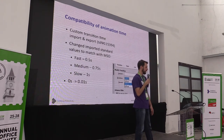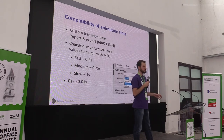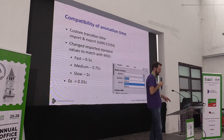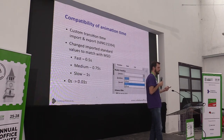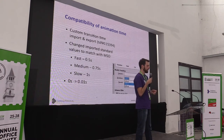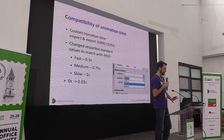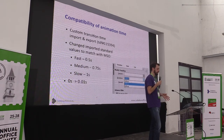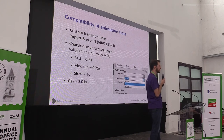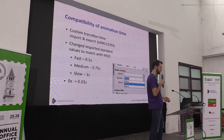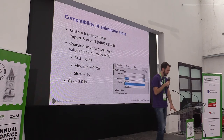During the work I noticed we had an incomplete set of transition time values, using only three fixed values, while in Microsoft Office you can add a custom value like one and a half seconds. I converted this to numbers instead of an enum, so now we can export any value. One edge case was zero seconds — Microsoft Office saves a very small number instead, and when we exported zero seconds we also got a repair warning.